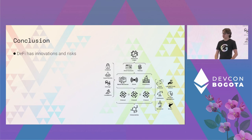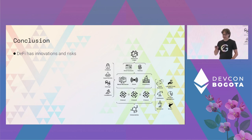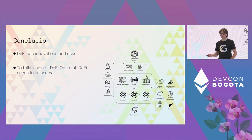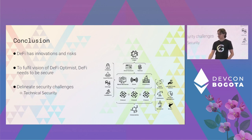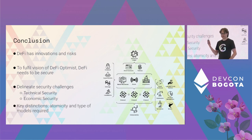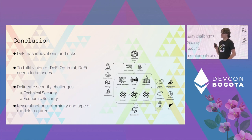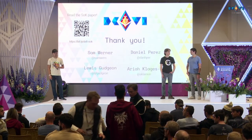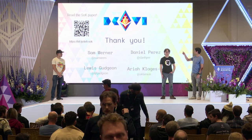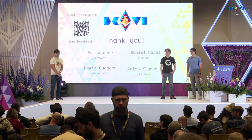To recap: DeFi has several innovations but also several risks. To fulfill the vision of the DeFi optimist, we really need to make sure DeFi is secure. We've delineated two types of security risk — technical and economic security — where the key distinction is based on atomicity. This tells you a lot about the models you need to understand security in your DeFi protocol. This is based on a paper we wrote — there's a QR code with the link, and more formal definitions are available there.